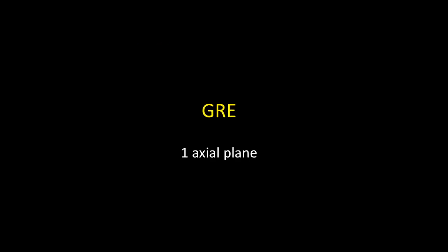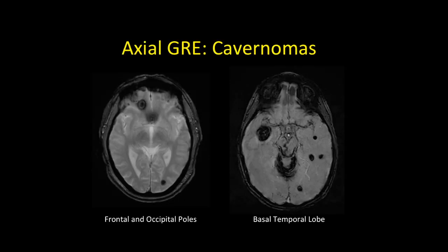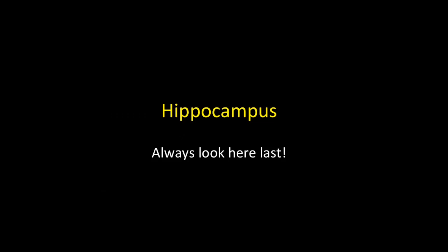Last sequence — gradient echo or SWI — just one axial plane, primarily looking for cavernous malformations. Here's one patient with cavernous malformations at the frontal and occipital poles, and another patient with multiple cavernous malformations with siderosis from bleeding and lesions in the basal temporal lobes.